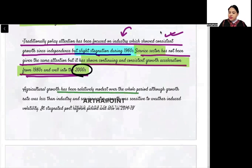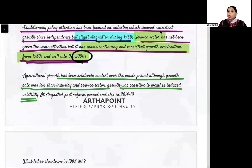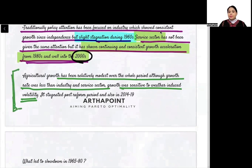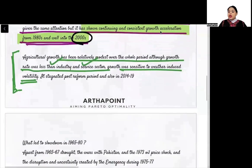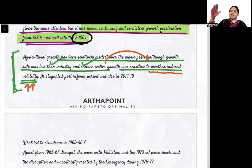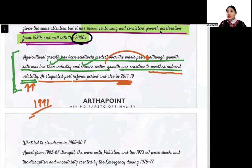Agricultural growth rate has been relatively modest over the whole period. Although the growth rate was less than industry and service sector, growth was sensitive to weather-induced volatility. Agricultural sector had very less contribution compared to industry and service sector. It stagnated in the post-reform period and also in 2014 to 2019.